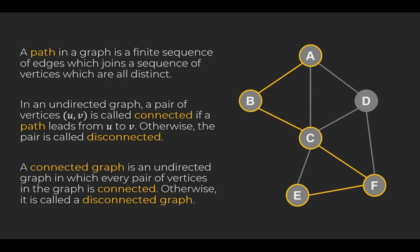For simplicity, we consider only connected graph. First, let's define what a connected graph is. For the time being, I am using a simple definition of a path and forego the more rigorous definition used in graph theory. A path in a graph is a finite sequence of edges which join a sequence of vertices which are all distinct. The sequence A, B, C, F, E is a path.